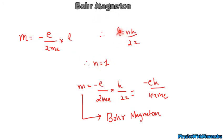Substituting n = 1 and L = h/2π gives m = -eh/(4πme). The magnetic moment of the first orbit is called Bohr magneton. Remember: Bohr magneton is the magnetic moment of an electron in the first orbit (n = 1, ground state).